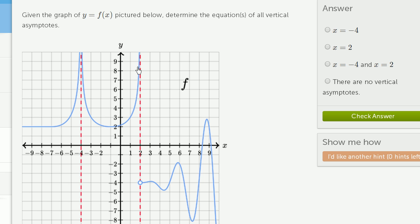It looks like we're approaching infinity or negative infinity. So that by itself, this unbounded left-hand limit is enough to consider x equals 2 a vertical asymptote. So we could say there's a vertical asymptote at x equals negative 4 and x equals 2.